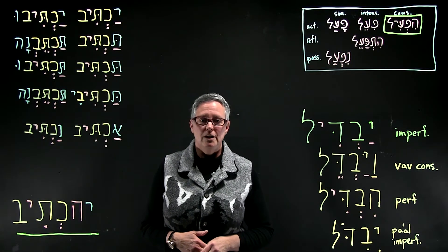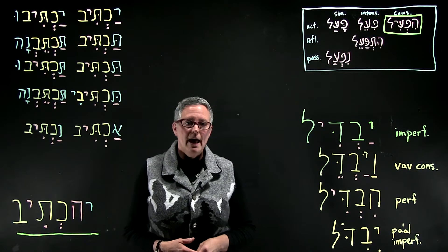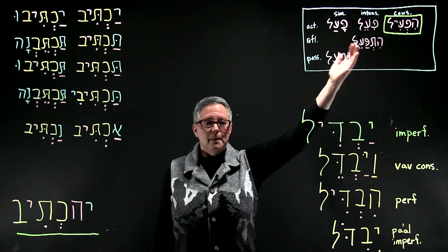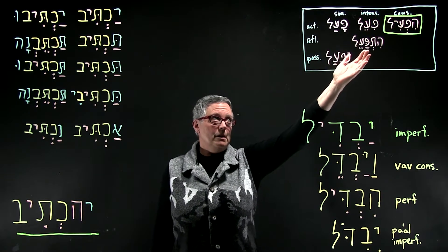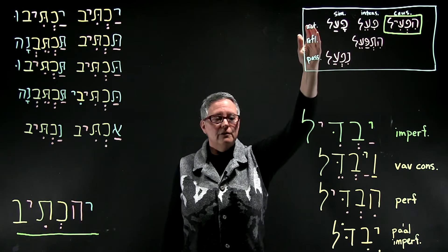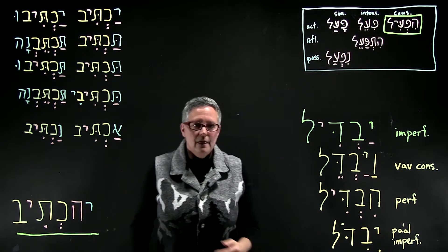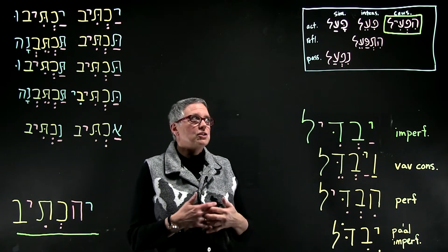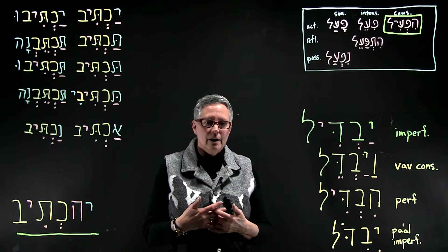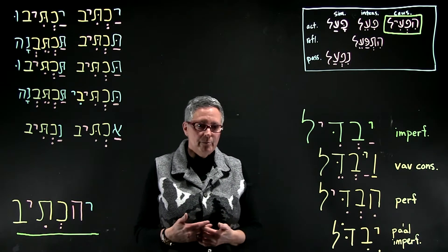This grammar video is about the Hi-feel imperfect. As you will remember, the Hi-feel binyan, or stem, often reflects active voice and causative action. We saw the names of the stems, which are the perfect forms. Now we're going to talk about the imperfect.